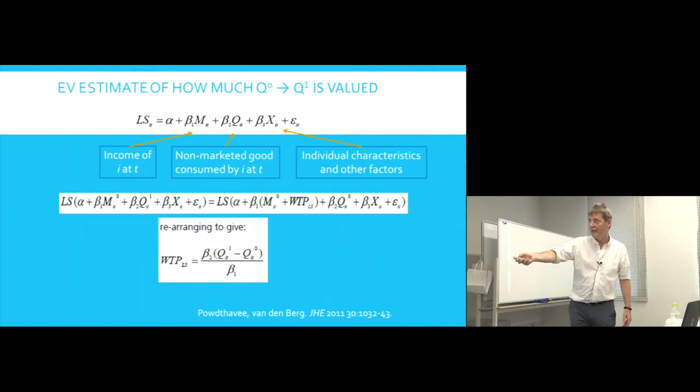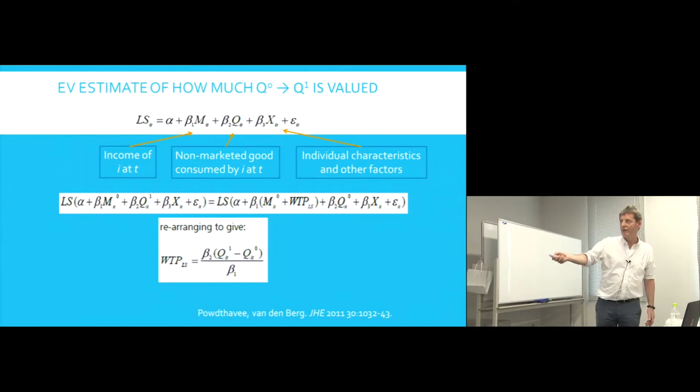So if we compare the two sides of this equation, there's life satisfaction given a particular income, given a particular level Q₁ of the non-marketed good, and given your personal characteristics. There's a life satisfaction here where same income but some payment here. So you're going to reduce your income. A different level of the non-marketed good, of course your same characteristics. And so the life satisfaction in two cases has been set equal. And in that case, if we rearrange everything, the willingness to pay is this coefficient β₂ times the difference in the non-marketed good divided by β₁.